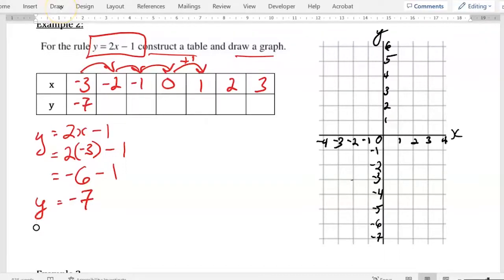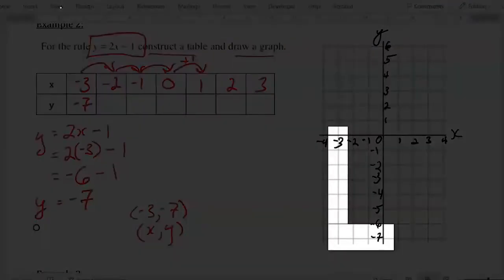And that allows us to plot that point on our graph. So the points I'm putting are x is negative 3, and y is negative 7. And remember, they always go in alphabetical order, x and then y. So x is negative 3, y is negative 7 takes us down to here.